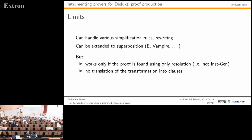This approach can be extended to various simplification rules and rewritings in iProver Modulo, and at least in theory to superposition—the calculus used in E and Vampire. However, it has limits: it only works if the proof uses resolution only, ruling out the instantiation-generation part of iProver Modulo, and crucially there is no translation of the transformation of the original formula into clauses—only the proof from the clauses to the empty clause.